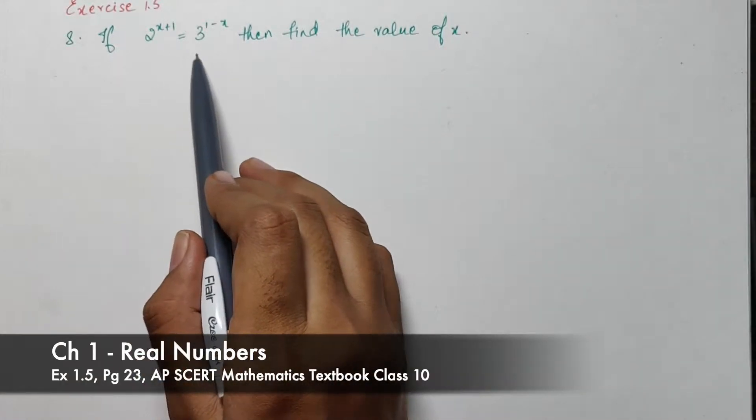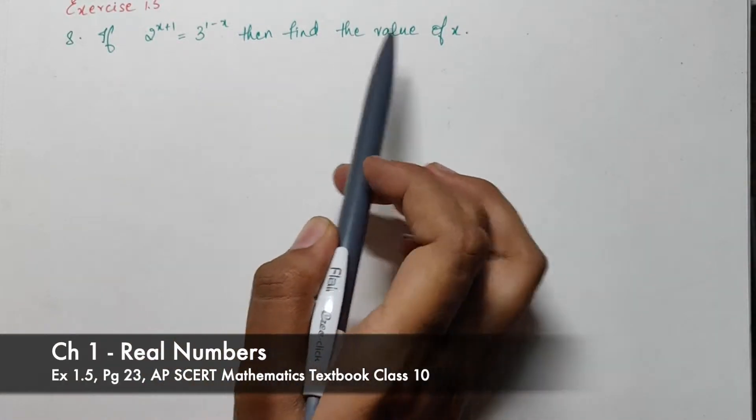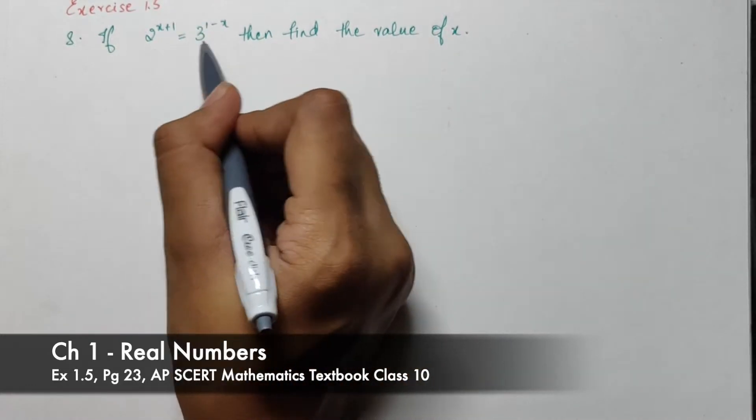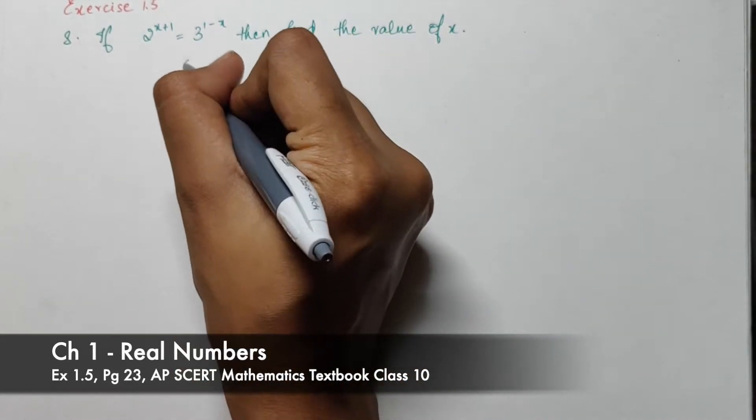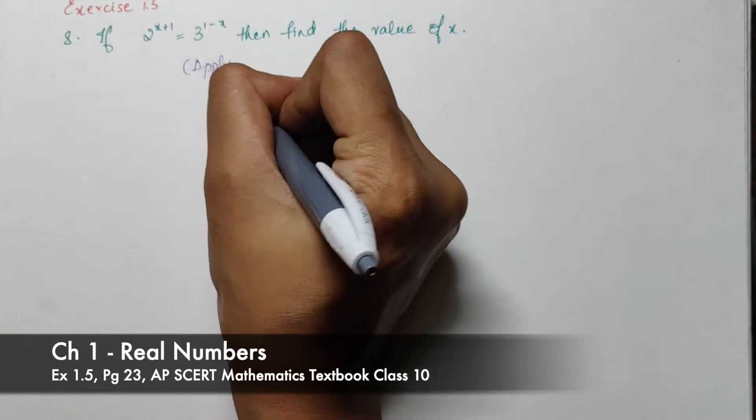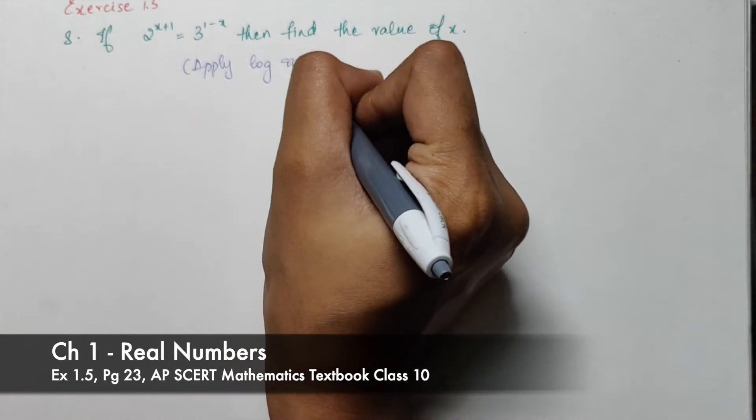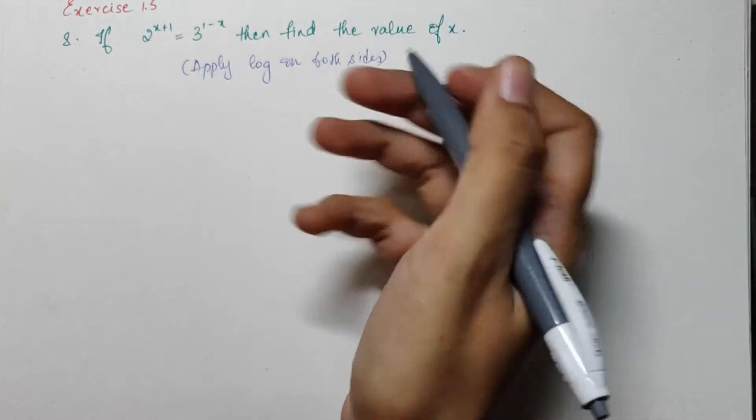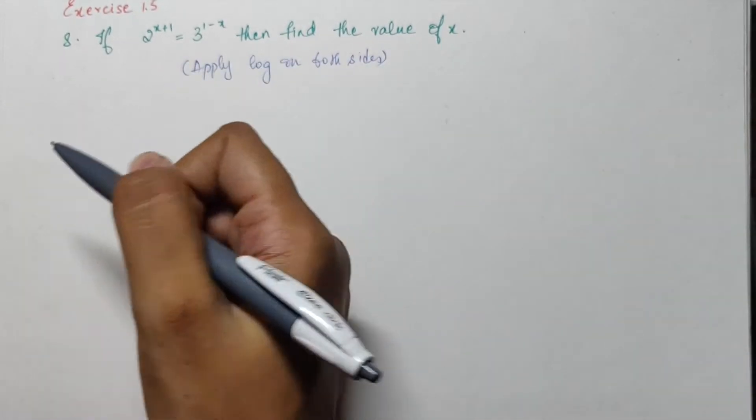If 2 power x plus 1 is equal to 3 power 1 minus x, then find the value of x. So for this equation I would apply log on both the sides, or it's simply converting exponential to logarithm.